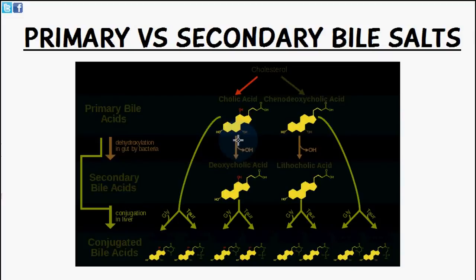Now most of these bile salts are reabsorbed in the small intestine and then they are recirculated back to the liver via enterohepatic circulation.